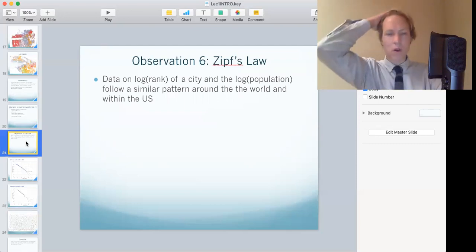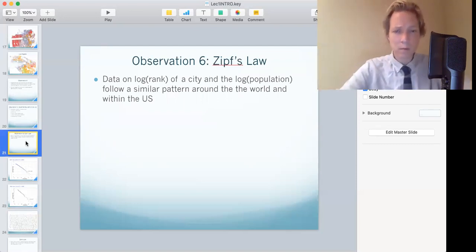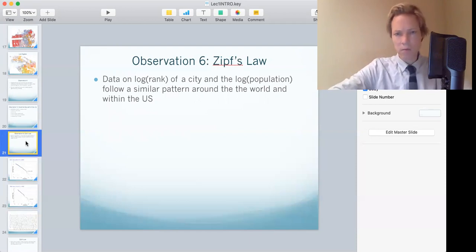Okay, last observation, kind of a weird one, kind of a mathematical one. And that is Zipf's law. This one's a little confusing. So buckle up, stay with me. So if you take the log of the rank of the city in population, so in the US, number one is New York, New York has the biggest population. Number two is LA, I'm guessing.